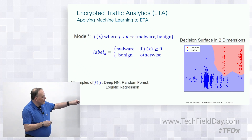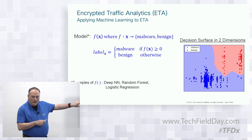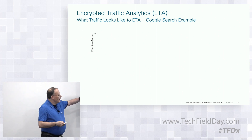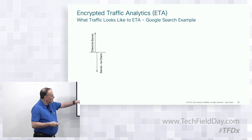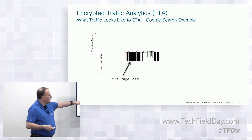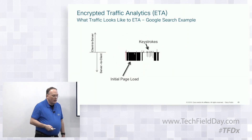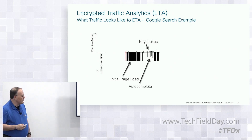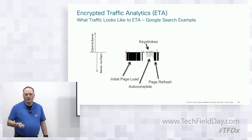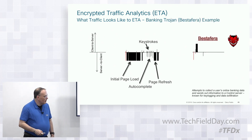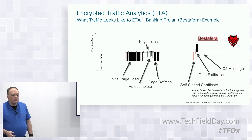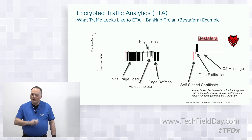What this lets us do is take packets and put them into either a benign profile or a malware-type profile. For example, fingerprinting all the traffic from a client to a server: a Google search leaves a recognizable fingerprint — the initial page load, then keystrokes for auto-completion with a few packets bouncing back and forth, then the page served up on return. It's all encrypted and we're not decrypting any of it, but it leaves a recognizable Google search fingerprint. Contrast that with a banking trojan: self-signed certificate, massive data exfiltration as soon as the connection comes up, and command-and-control messages going back and forth — all encrypted, none of it decrypted.